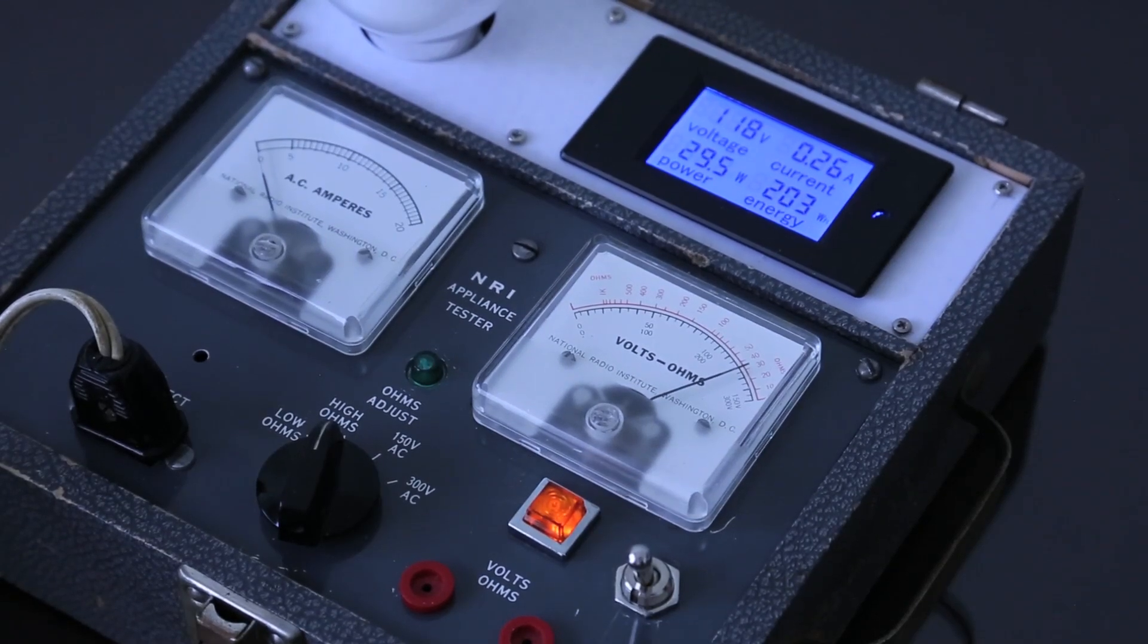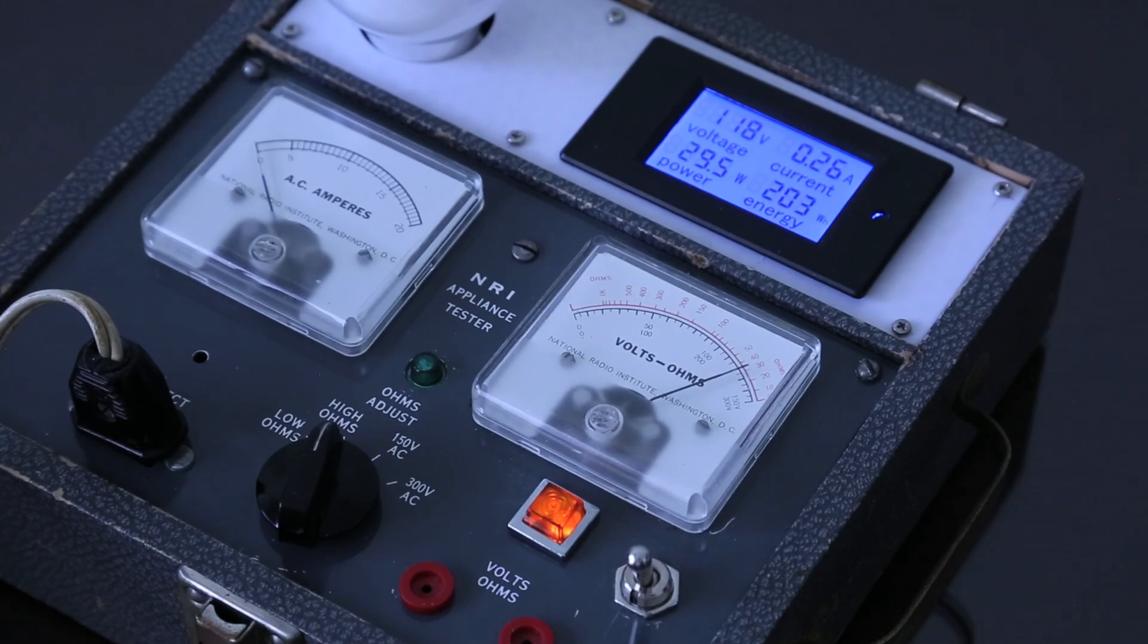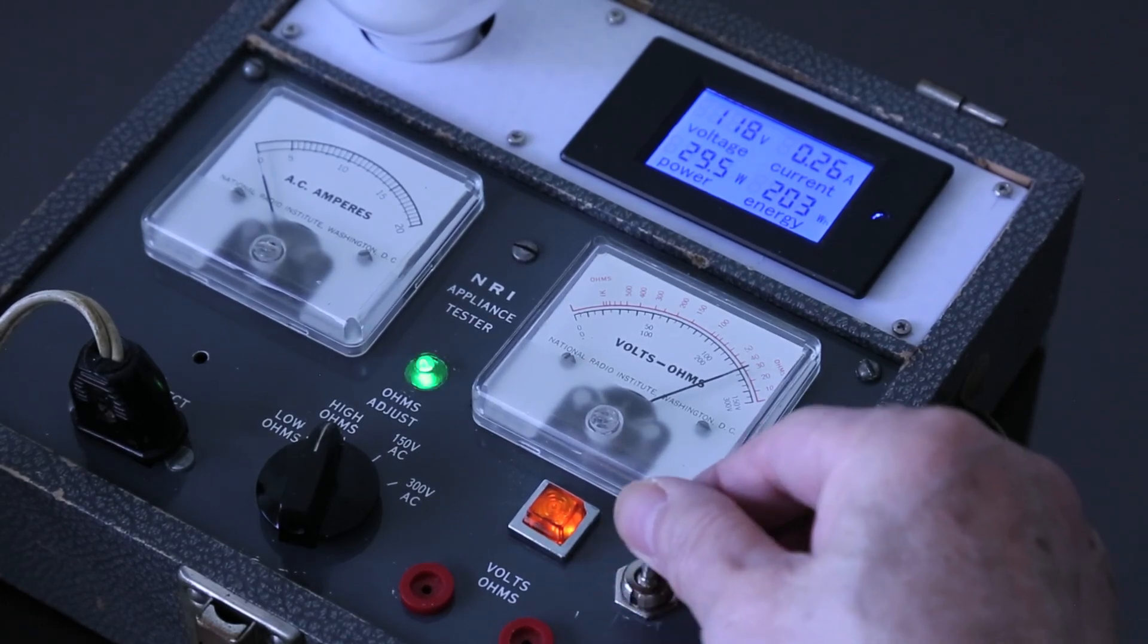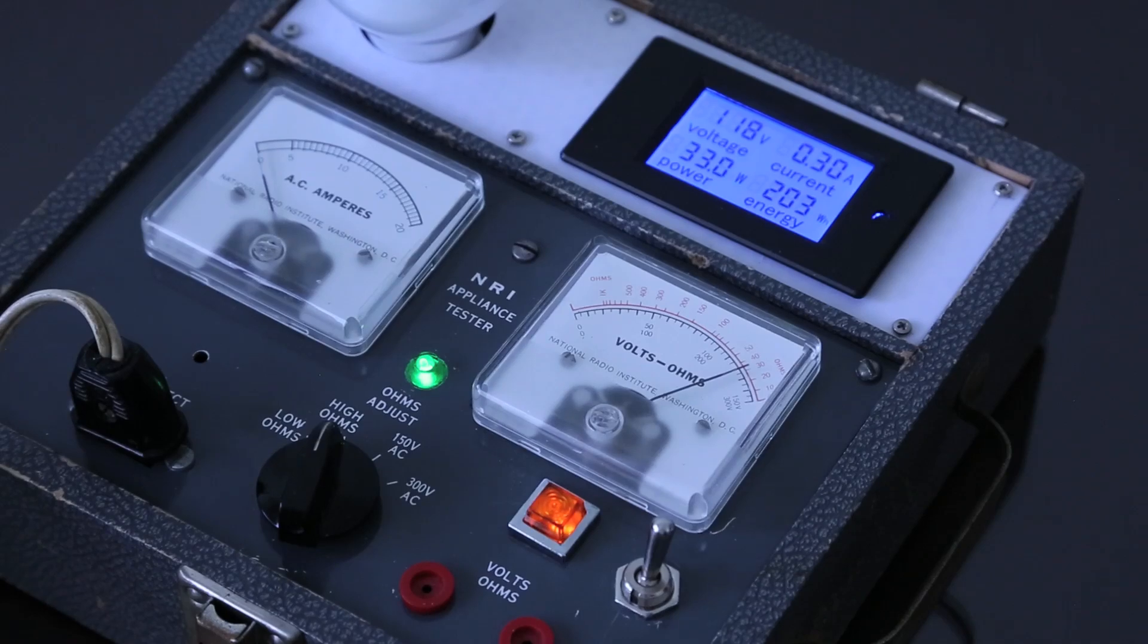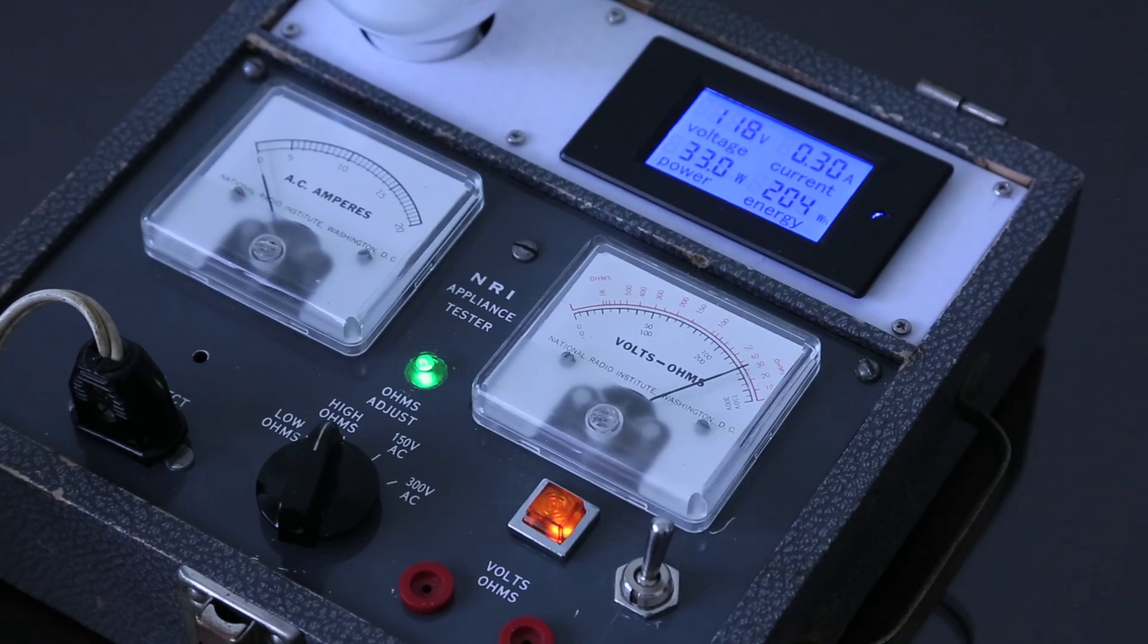And then, once you have confirmed your equipment has no short circuit, you can change the mode switch to operate or full load position. Next, let's see how to choose the wattage of the incandescent bulb.